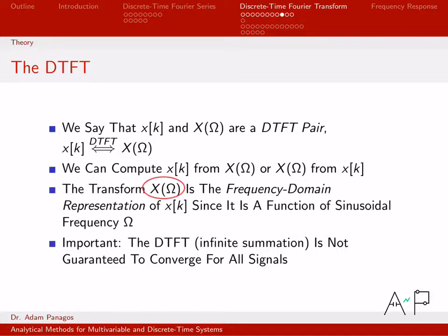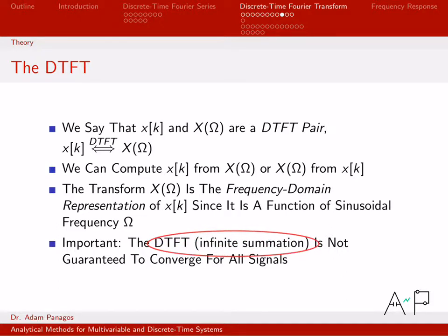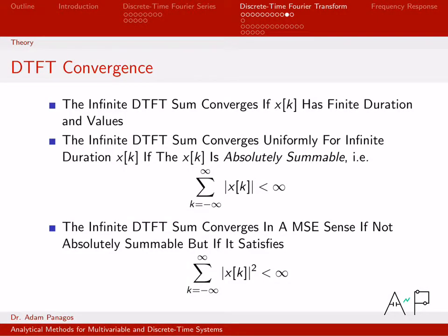X of omega is called the frequency domain representation of the signal — it tells me the same information as before. X of omega tells me how much of frequency omega is present in the signal. In general this is a complex quantity, so the magnitude of X of omega tells me the amplitude of the frequency at omega, and the phase of X of omega tells me the phase. One thing to watch out for in the DTFT is that since we're performing an infinite sum from k equals minus infinity to infinity, that's not necessarily always going to converge.